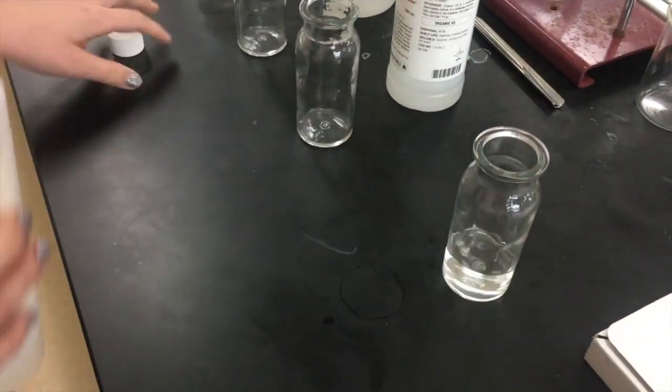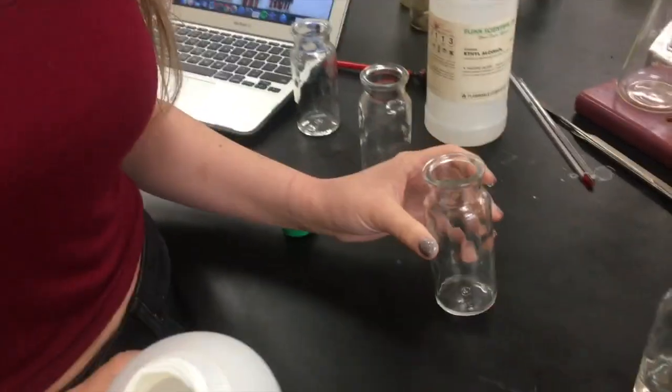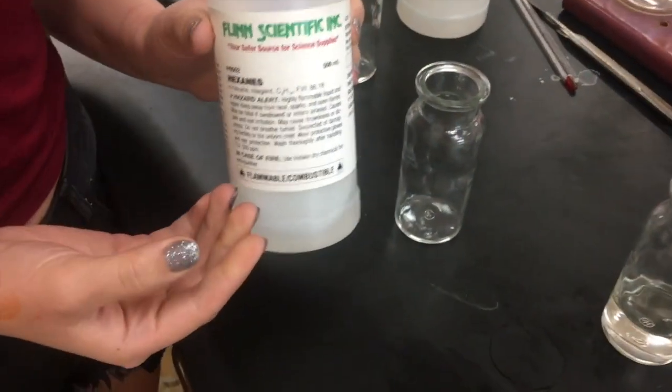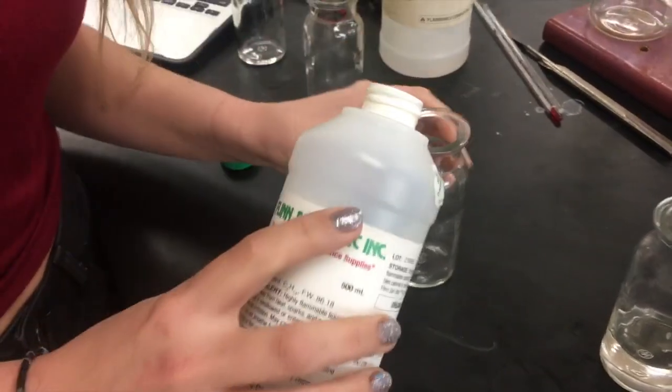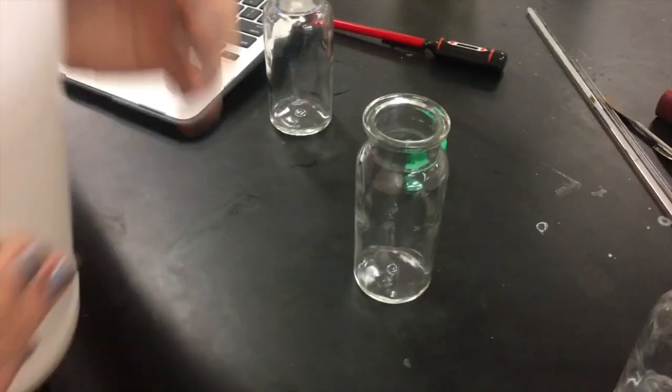Our first one is acetone, of course, and our second one is hexanes, and we're just pouring these into little collection jars. You can get these collection jars on Amazon for about $15. They're really simple, really basic, but they did the job.